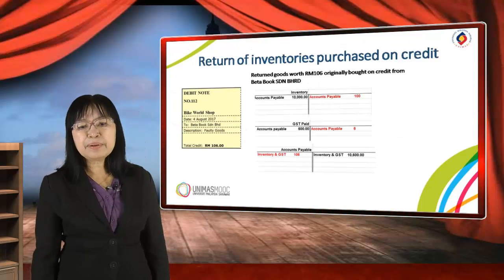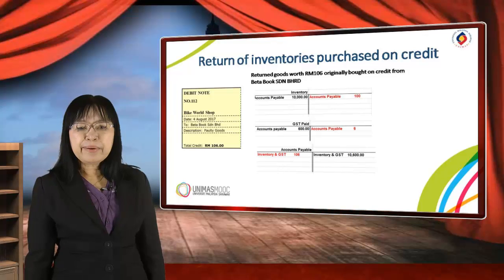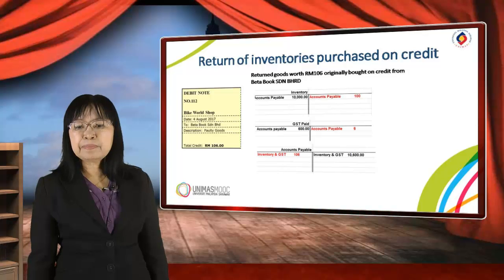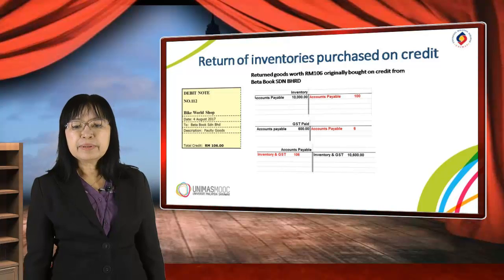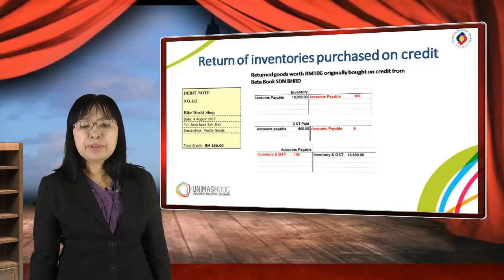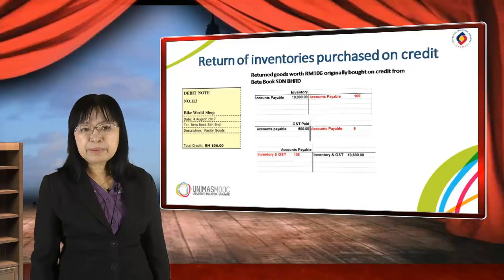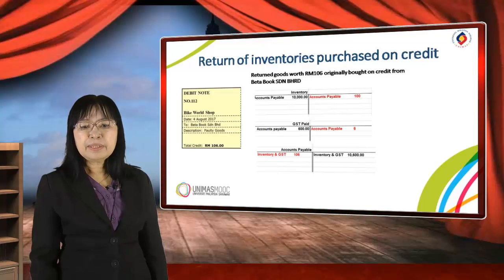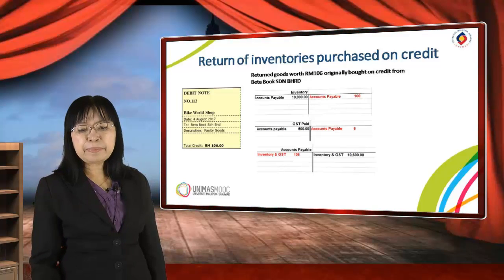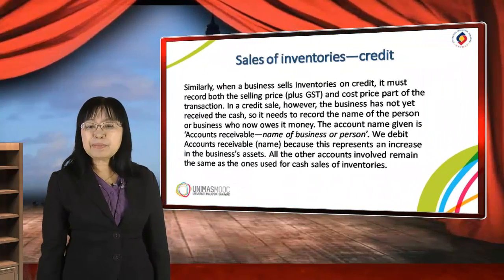Let's look at the return of inventories purchased on credit as it appears in the ledger. The goods worth RM106 were originally bought on credit and are now returned. These transactions appear in the general ledger: the inventory account will be decreased by RM100, the GST paid account will be credited by RM6, and altogether RM106 will be credited in the accounts payable account.